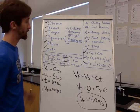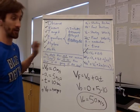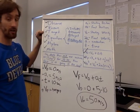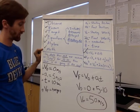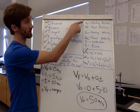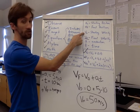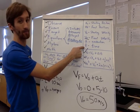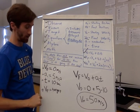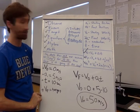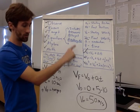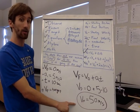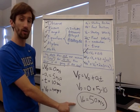To recap: OK TEAM is Observe, Known, Target, Equation, Algebra, and Math. All of our variables are starting position, final position, starting velocity, final velocity, acceleration, and time. We find all of our knowns, find our target, decide which equation to use, do the algebra if needed to rearrange that equation, and then plug in our numbers. And that is how we solve motion problems using the OK TEAM method.